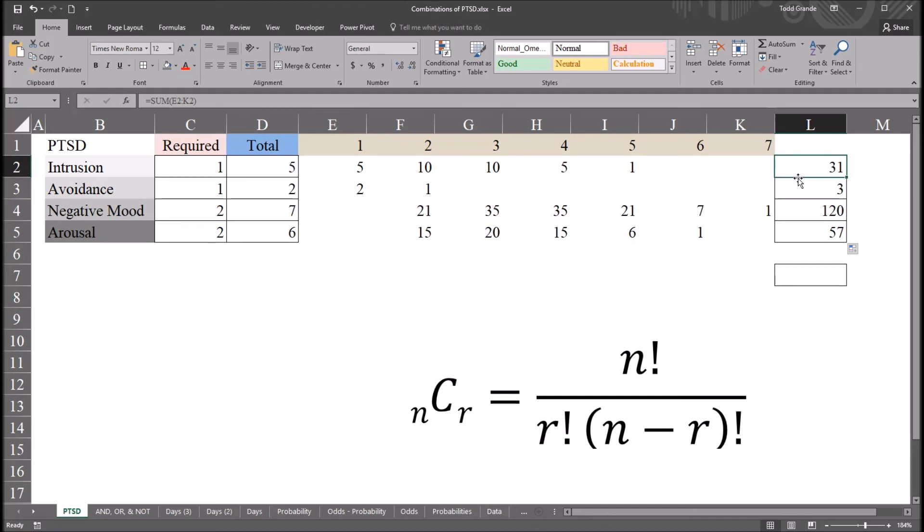Now in order to determine the total number of potential PTSD definitions, I need to multiply all these together. So down here, this will be equal sign, and I'll take the first combination for intrusion, 31, then asterisk, 3, asterisk, 120, asterisk, 57. So all four of these multiply together. It gives me 636,120. As I mentioned, this is the same value that we see in the Glatzer-Bryant article in 2013. So this number, 636,120, this is the total number of combinations for PTSD.